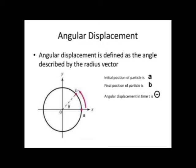Angular displacement can be defined as the angle described by the radius vector. This figure shows that OA is the initial position of the particle and OB is the final position of the particle. In the given time interval, it moves from OA to OB and makes an angle theta. So this theta is called angular displacement.